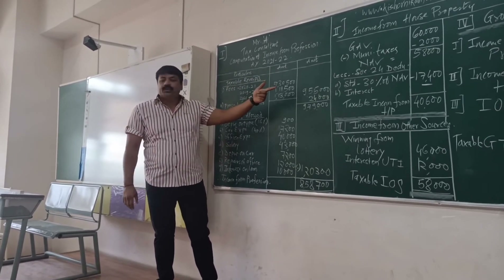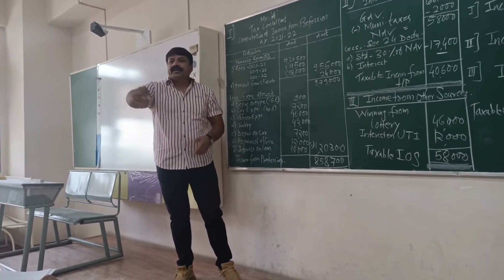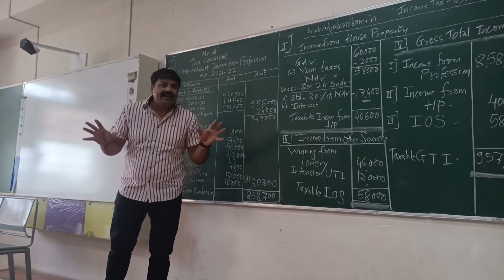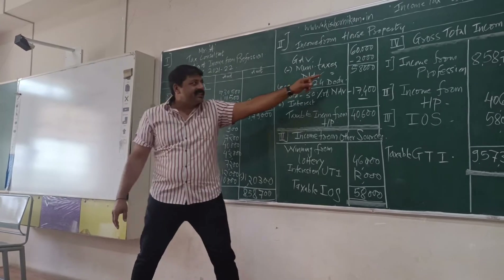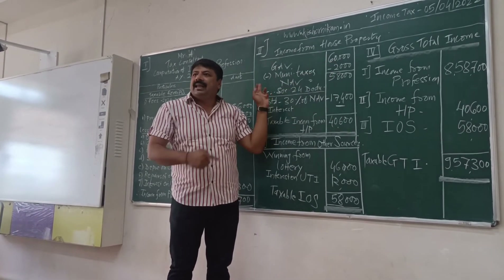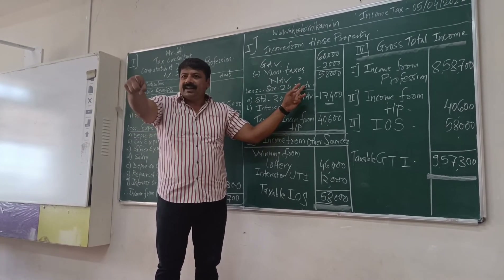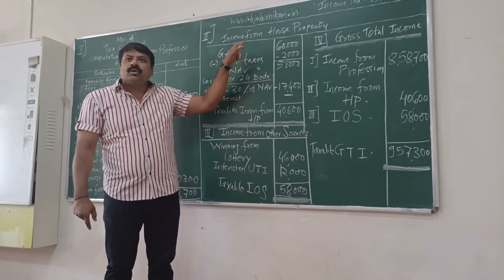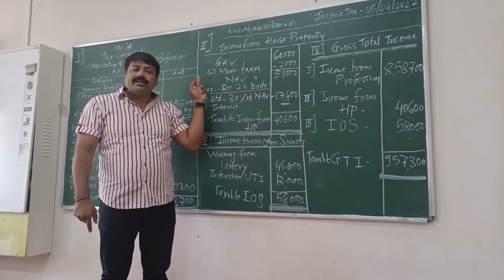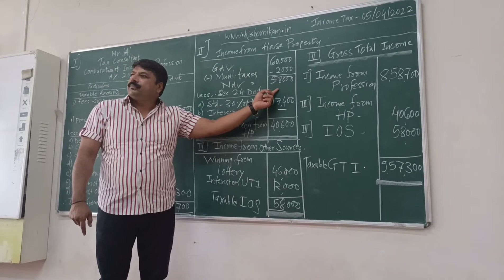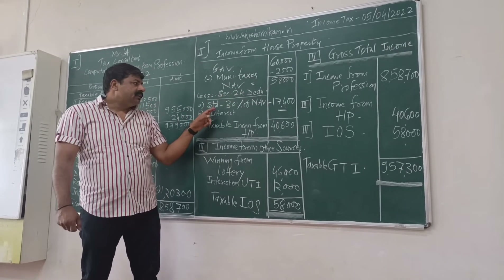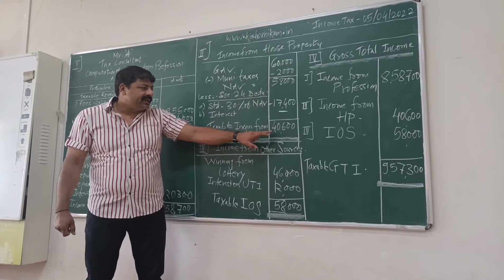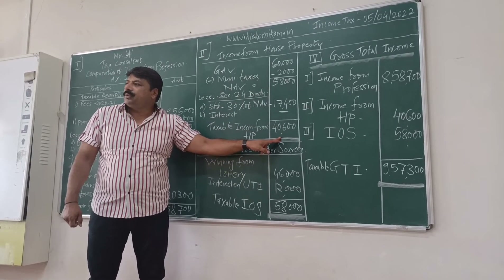We have got house property income also. Rent from let-out property is given — 60,000. That is the gross annual value because no municipal value or fair rent is given, but you have actual rent received of 60,000. Less municipal taxes paid — 2,000. Gross annual value minus municipal taxes equals net annual value of 58,000. Less Section 24 deductions — standard deduction of 30% of net annual value. After deducting from net annual value, taxable income from house property is 40,600.